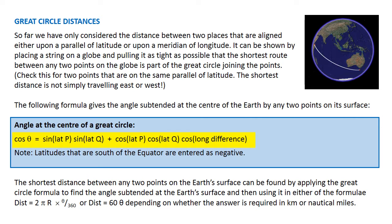The shortest distance between any two points on the Earth's surface can be found by applying the great circle formula to find the angle subtended at the Earth's centre and then using it in either of the formulas: distance equals 2πr times θ over 360 or distance equals 60θ, depending on whether you want the answer in kilometres or nautical miles.